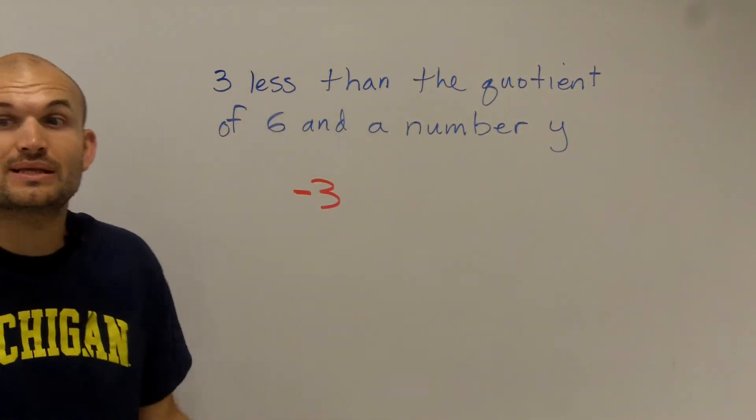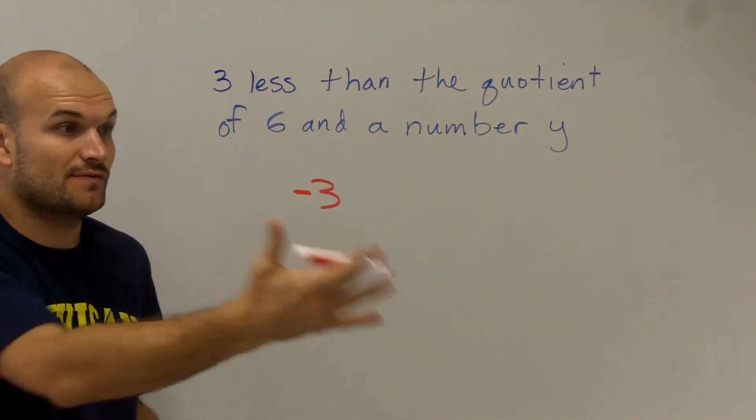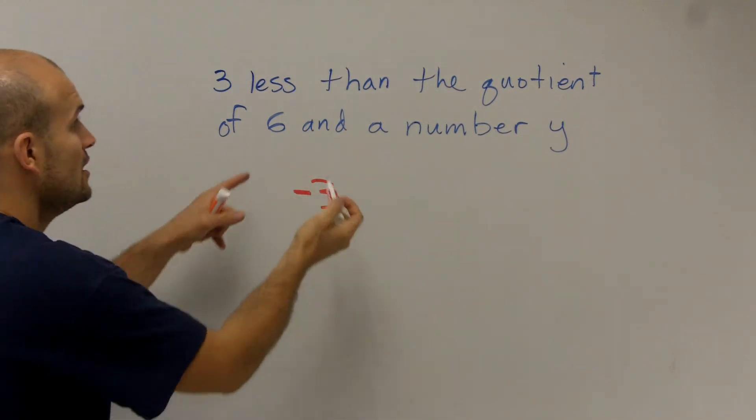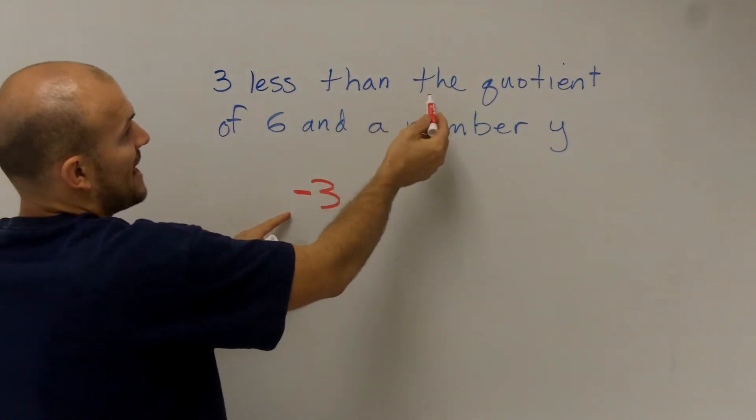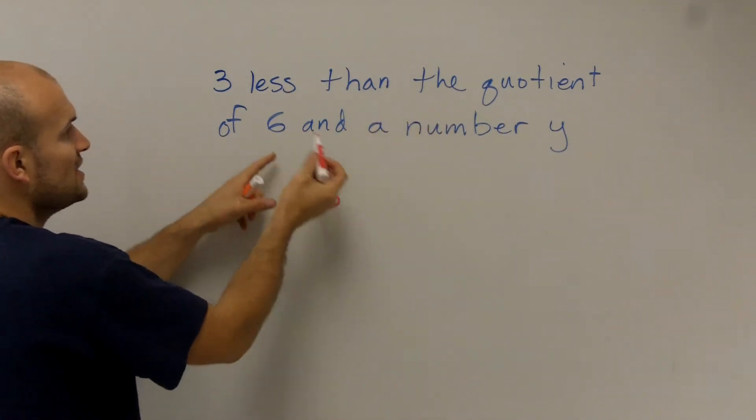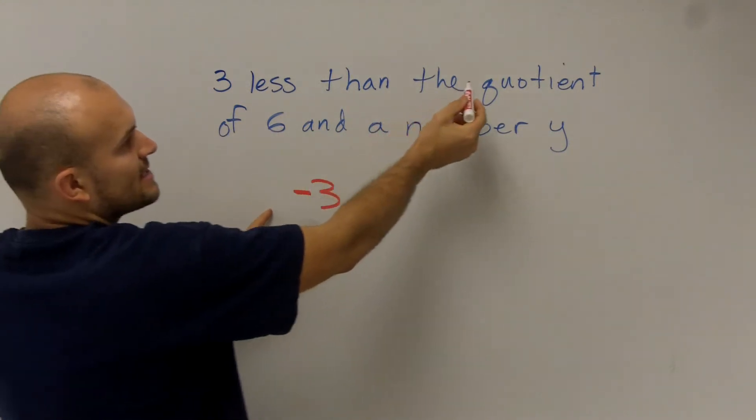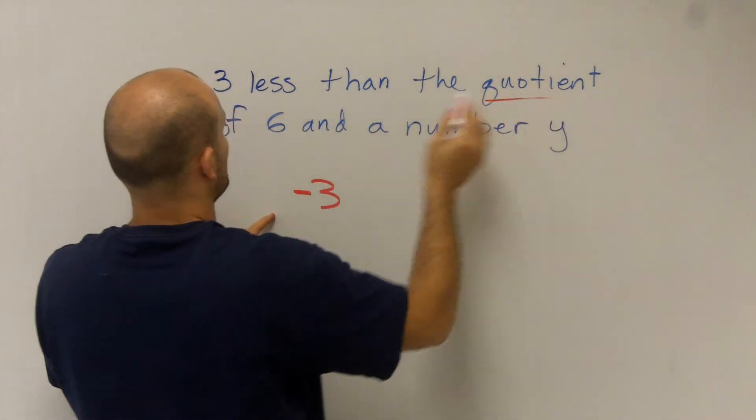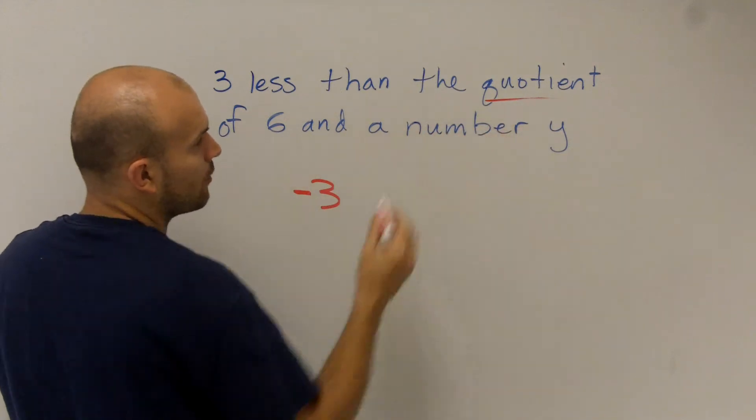It says three less than something. So if I have something and you have three less, you're going to take whatever I have and subtract three. So I have three less than, so I'm going to be subtracting three from what? It says the quotient of six and a number y.